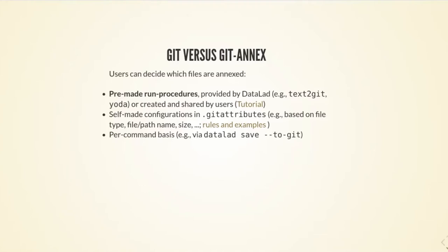You can also configure this on a per-command basis. datalad save has an additional parameter --to-git, and when you run it, it will put the saved file into Git instead of Git Annex, regardless of what the configuration says. With these configurations in place, datasets try to operate cleverly according to what you tell them, so that a datalad save puts a file wherever it needs to go — either in Git or in Git Annex — and you don't need to decide on a file-by-file basis.